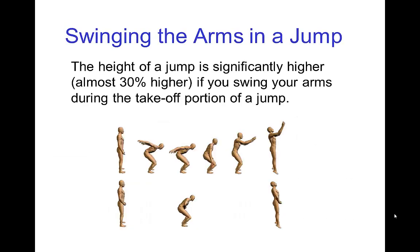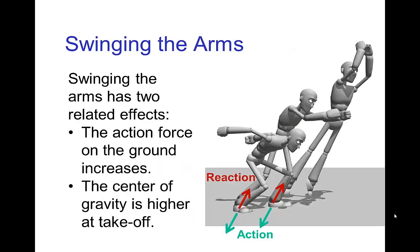A good example of that is swinging the arms in a jump. The height of a jump is significantly higher if you swing your arms as you're taking off. The swinging of the arms has two related effects. As you're swinging the arms upward, you actually exert more force on the ground and so you have a larger reaction force pushing you up.